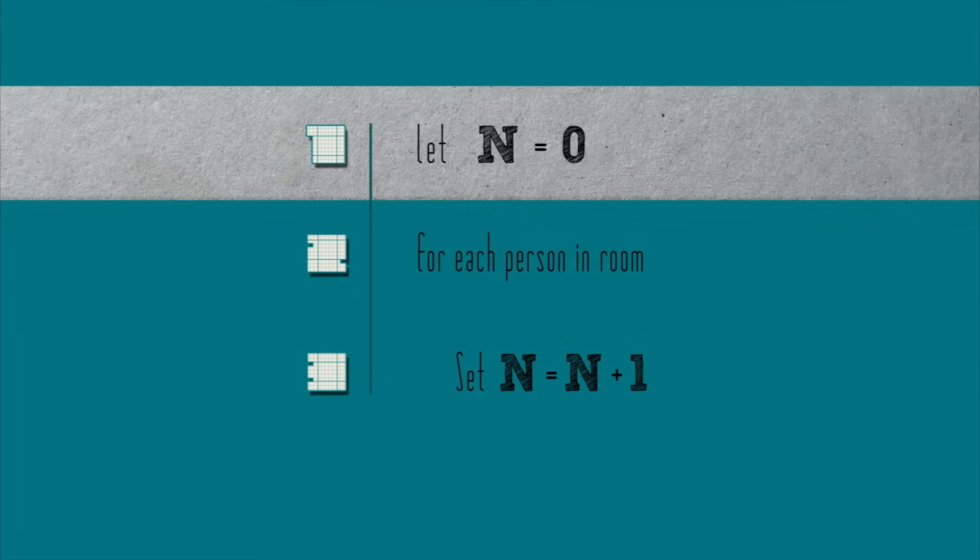How to interpret this pseudocode? Well, line one declares, so to speak, a variable called n and initializes its value to zero. This just means that at the beginning of our algorithm, the thing with which we're counting has a value of zero. After all, before we start counting, we haven't counted anything yet. Calling this variable n is just a convention. I could have called it most anything.